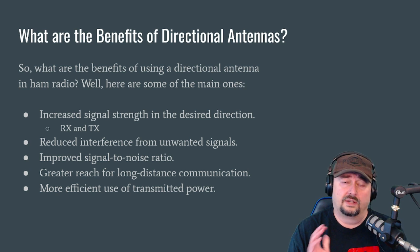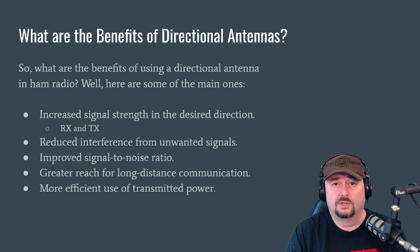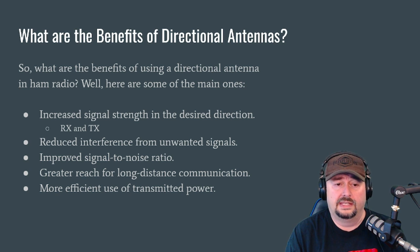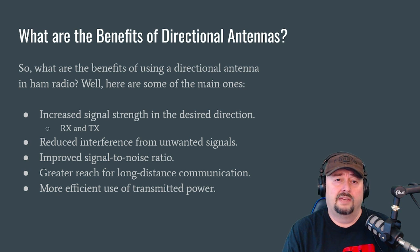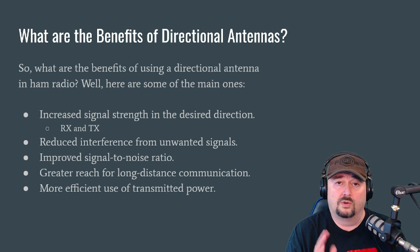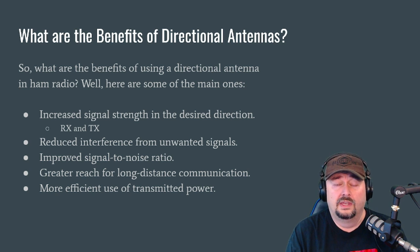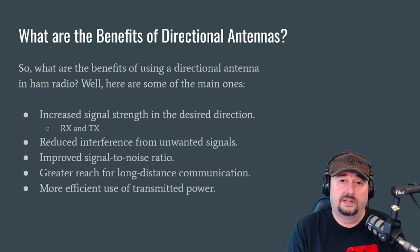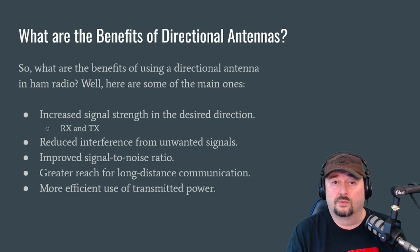Directional antennas also allow greater reach for long-distance communication, which is what a lot of hams are after. They also offer more efficient use of transmitted power. If I have 50 watts going out of my antenna and I focus it in a direction that improves gain by 3 dB, my 50 watts would seem like a 100-watt station. At 6 dB of gain, doubling twice, I'd be performing as if transmitting with 200 watts — which is pretty handy.